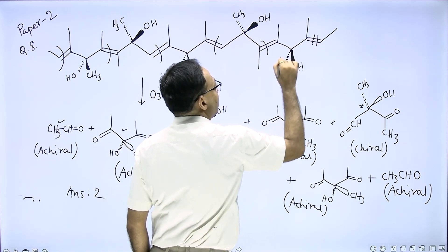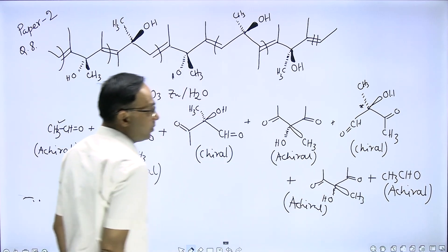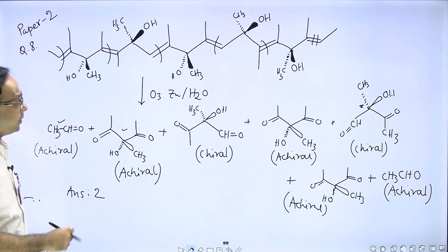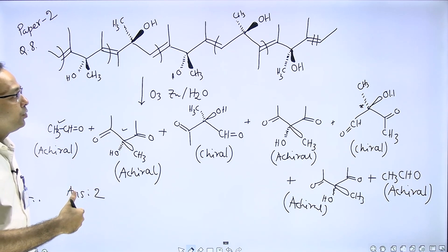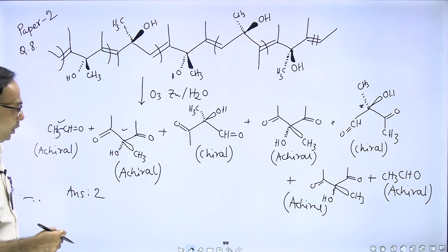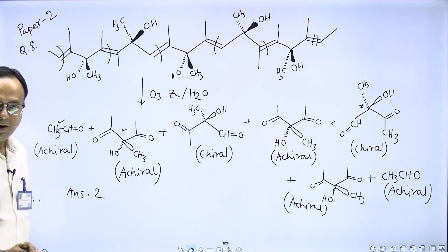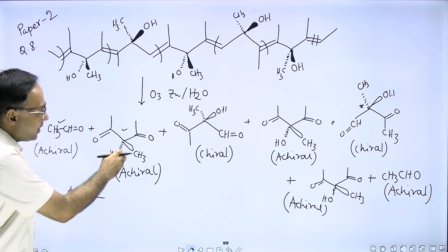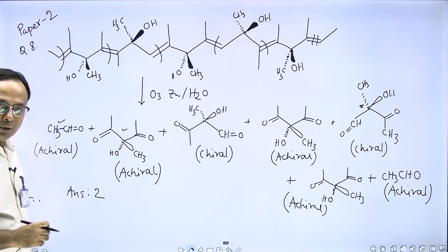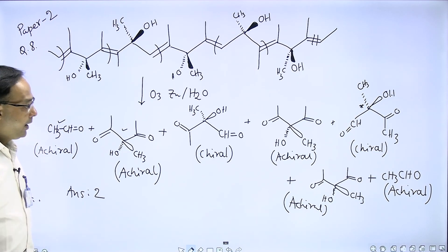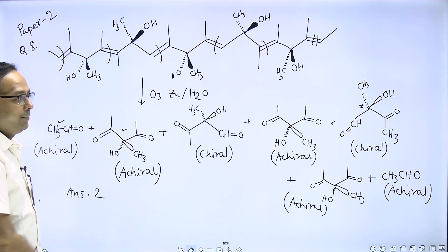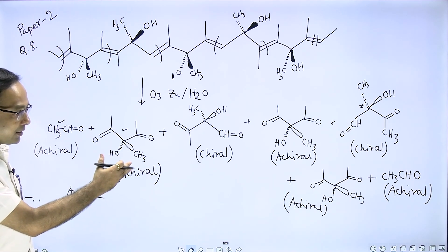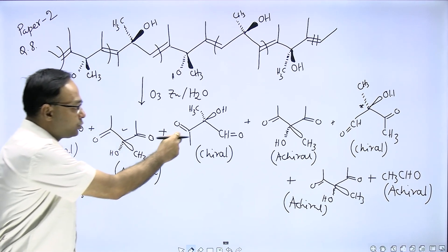And the last two compounds - here it is a chiral compound and again acetylaldehyde is formed. So this compound when allowed to undergo ozonolysis forms two equivalents of acetylaldehyde which are achiral, three equivalents of diketone which is achiral, and two compounds which are chiral products.